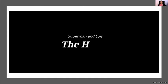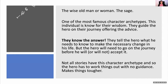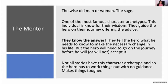Okay, it looks sort of back to the old-style Superman. Apparently in the new series he's got two kids. Let's move on to the next one: the mentor, sometimes called the wise old man or woman, or the sage. Of course, this is another really famous character archetype. This individual is known for their wisdom.